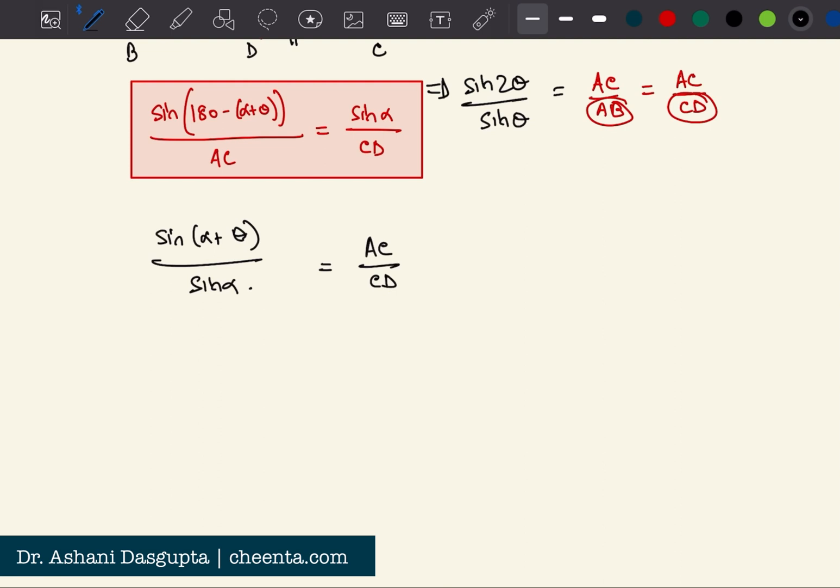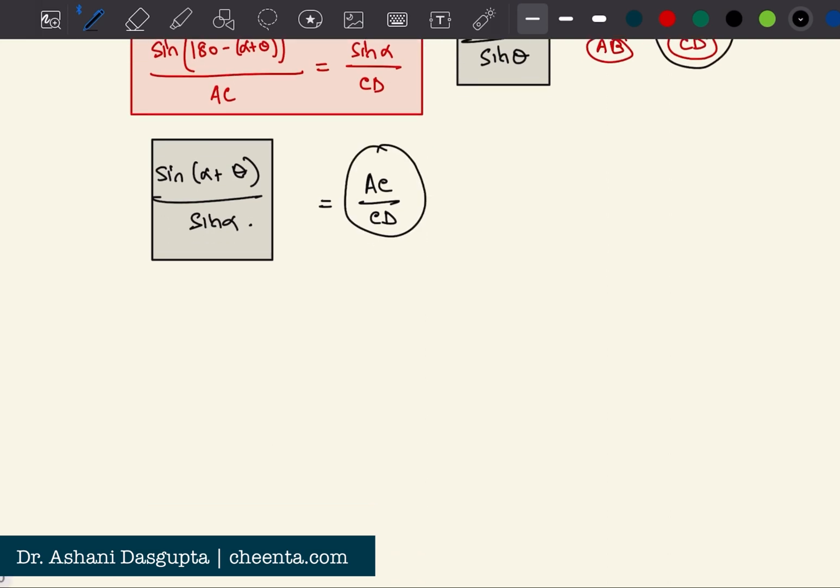So now we can equate these two things - sine two theta by sine theta and sine of alpha plus theta by sine alpha, because both of them are equal to AC over CD. So we have sine of two theta by sine theta equal to sine of alpha plus theta by sine alpha.